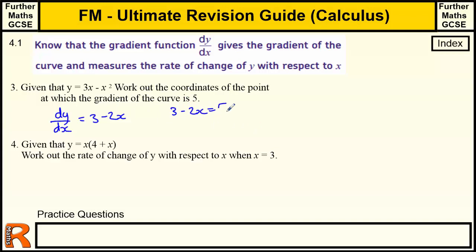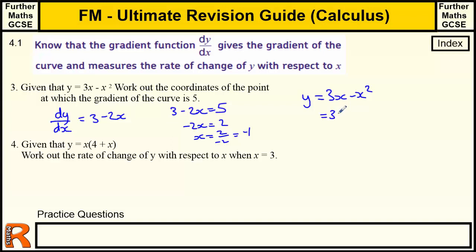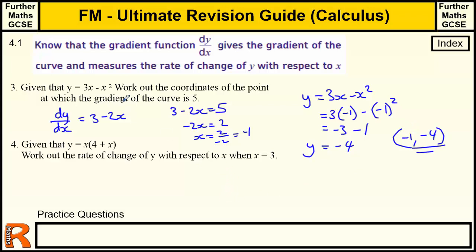We're told the gradient equals 5, so 3 minus 2x equals 5. Take away the 3 from both sides to get minus 2x equals 2, then divide by minus 2 to get x equals minus 1. To find the y-coordinate, substitute x equals minus 1 into y equals 3x minus x squared: 3 times minus 1 minus (minus 1) squared equals minus 3 minus 1, which is minus 4. So the coordinates where the gradient is 5 are (minus 1, minus 4).